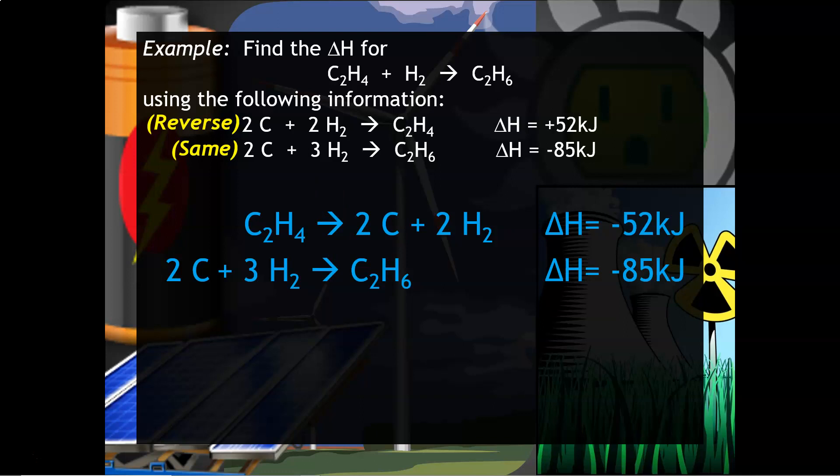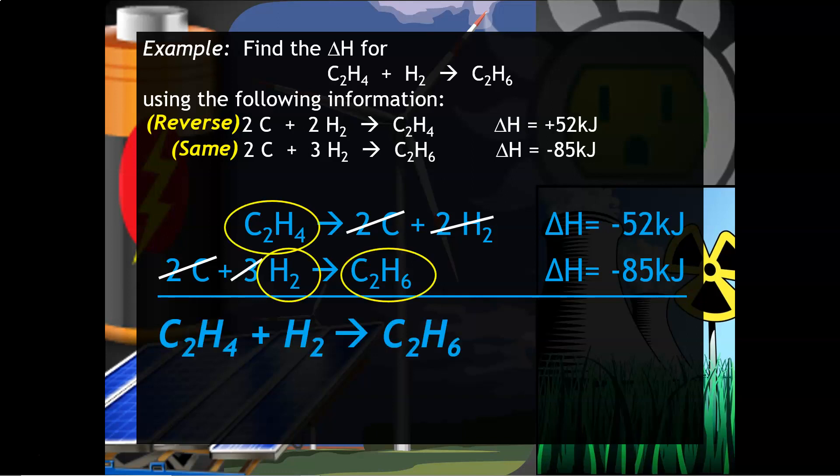To double check that you have the right equation, you want to add the equations together. So what you'll do is you'll cross out the like substances on either side of the equation. And then you can see what remains is what you're going to write down. You want to check to see that this equation is equal to the overall equation, which in fact it is. So then all you have to do is add the delta H's together. Really the answer that you're trying to get is this delta H value that you see right here.